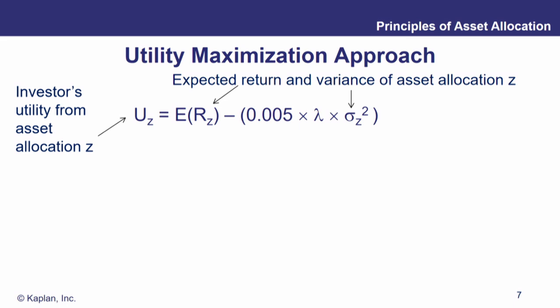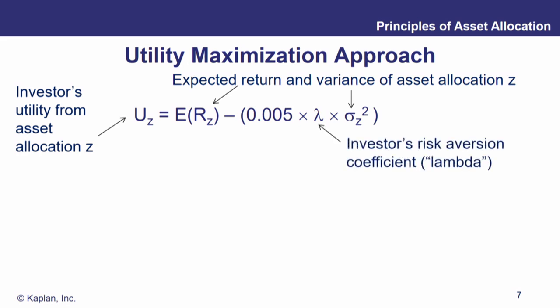Another approach toward finding the optimal allocation is utility maximization. The utility function is: U_z = E(R) − λσ²_z, where lambda is the coefficient of risk aversion. You may also see this written as R_a — lambda and R_a mean the same thing, just risk aversion. The more risk aversion, the higher that coefficient, and the more risk takes away utility from their portfolios.